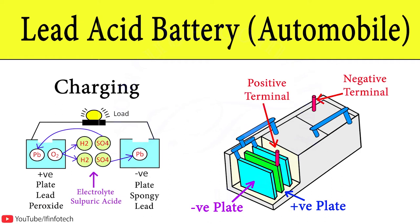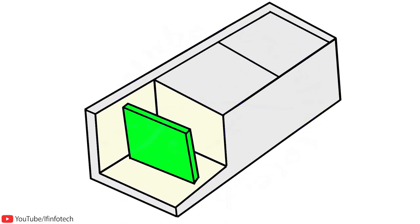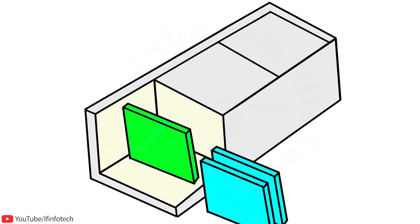In today's session, we will learn about working of lead acid battery. It consists of a number of cells connected in series. In each cell, there are two plates, positive and negative.